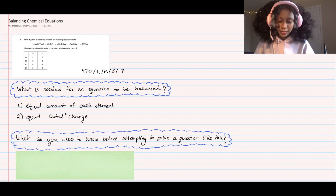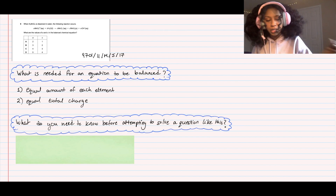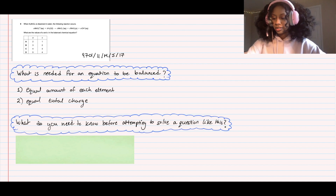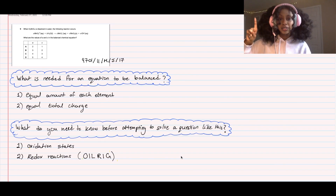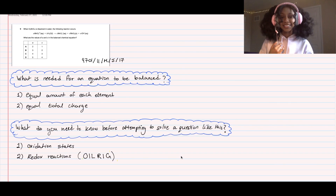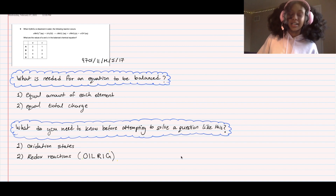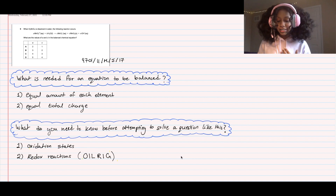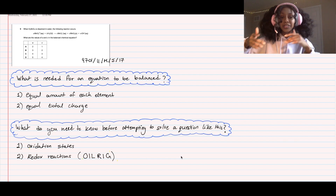What do you need to know before attempting to solve a question like this? There are two things: oxidation states and redox reactions, and then there's the acronym OIL RIG. I'm sure many of you have covered this with your teachers, but I'll explain it. If you already know what it is, I'll place timestamps in the video so you can skip ahead.